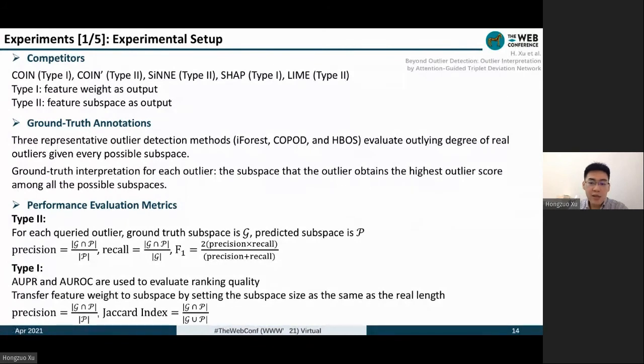In terms of evaluation metrics, for Type 2 methods they use feature subspace as output. We can denote the ground truth subspace as G and the predicted subspace as P. We can use precision, recall, and F1 score to evaluate their performance. The performance of the whole dataset is the average value of every real outlier.